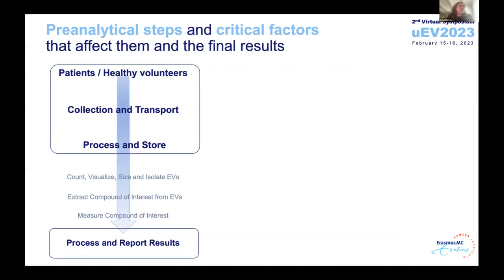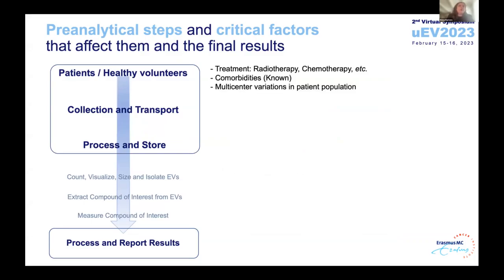That's why I would like to take a close look today at the pre-analytical steps and the critical factors that affect them. If you look at the workflow we have, we start always with the patients or the healthy volunteers depending on the study design. Factors that have influence here are the treatments the patients are undergoing, any known comorbidities, and also multi-center variation in the patient population — meaning an academic center may see only patients with more rare tumors or complex clinical cases, so your biobank population may be biased compared to a more general patient population seen in a peripheral hospital.